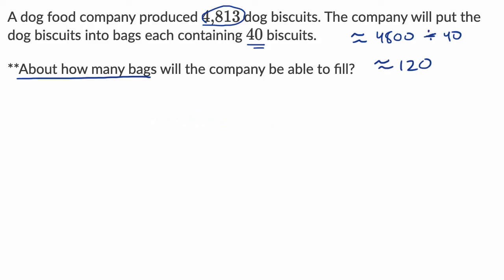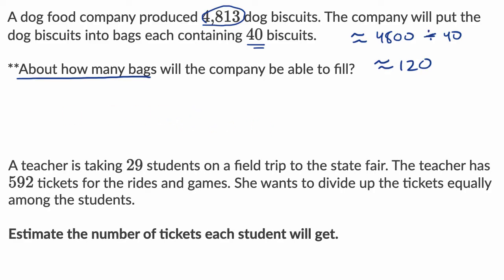Let's do another example. A teacher is taking 29 students on a field trip to the state fair. The teacher has 592 tickets for the rides and games. She wants to divide up the tickets equally among the students. Estimate the number of tickets each student will get. Pause the video and try that. Neither of these numbers are really that friendly, but we can round them to numbers that are a little bit more friendly.